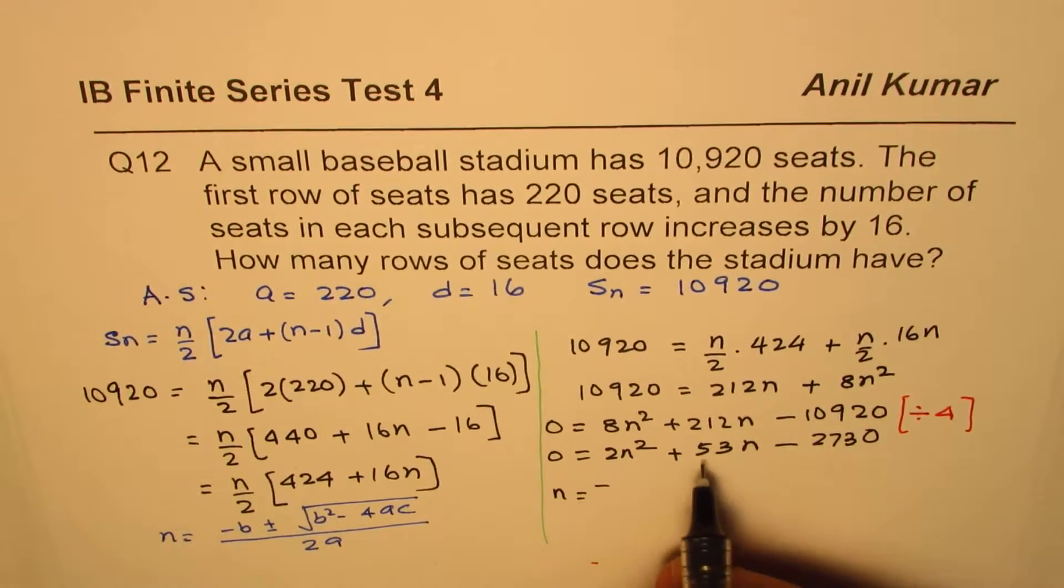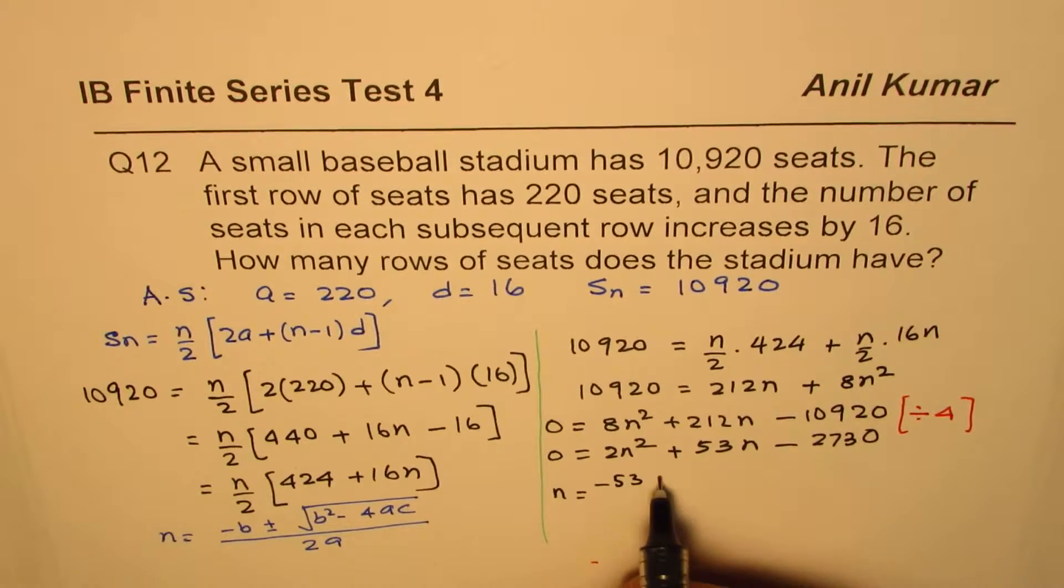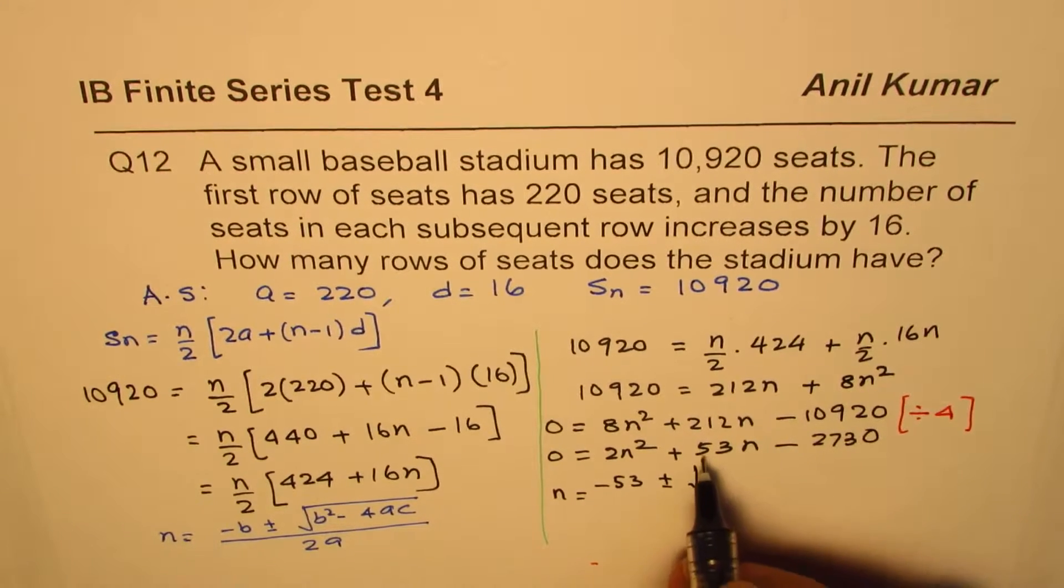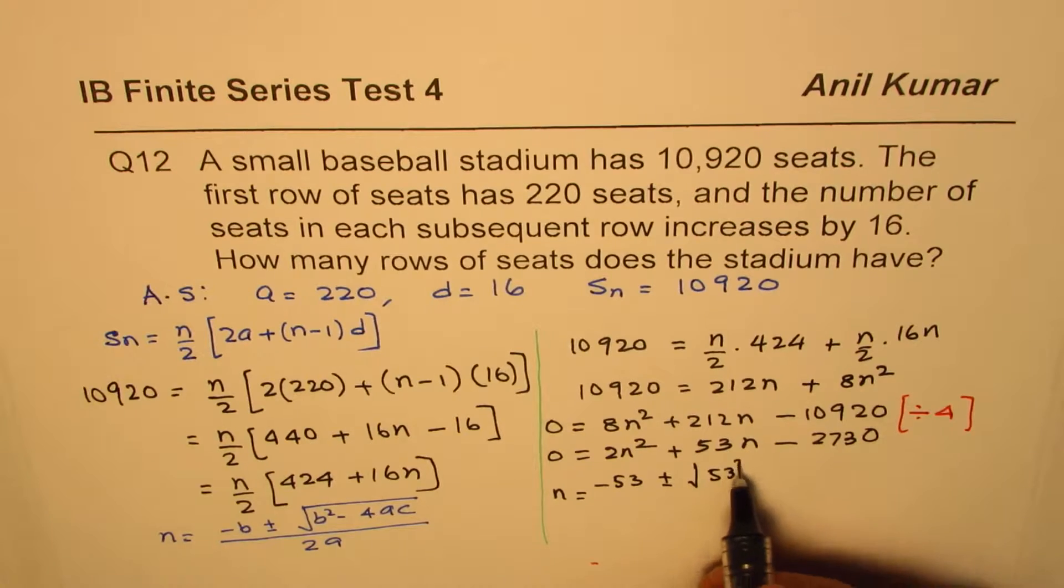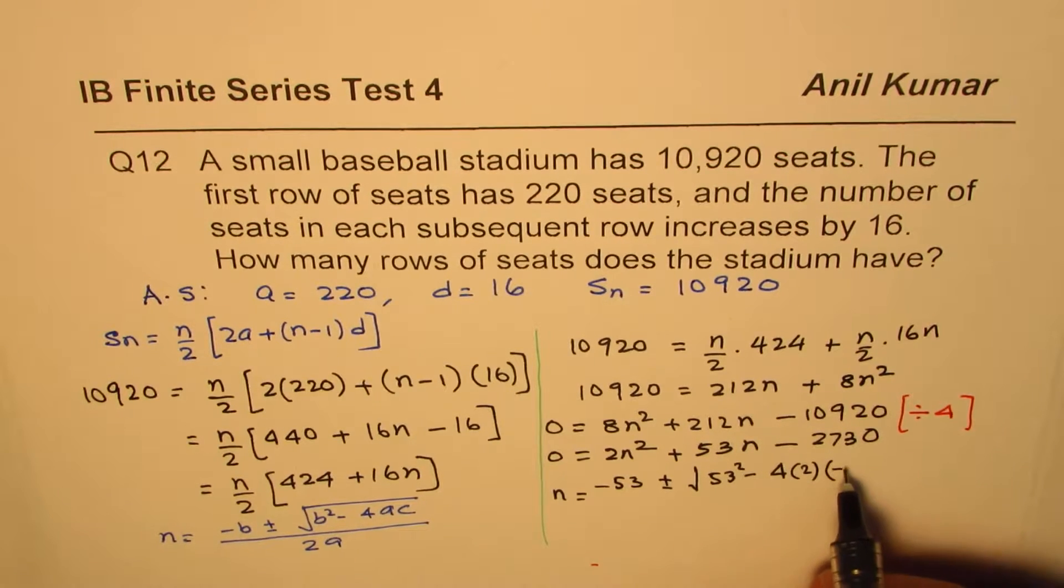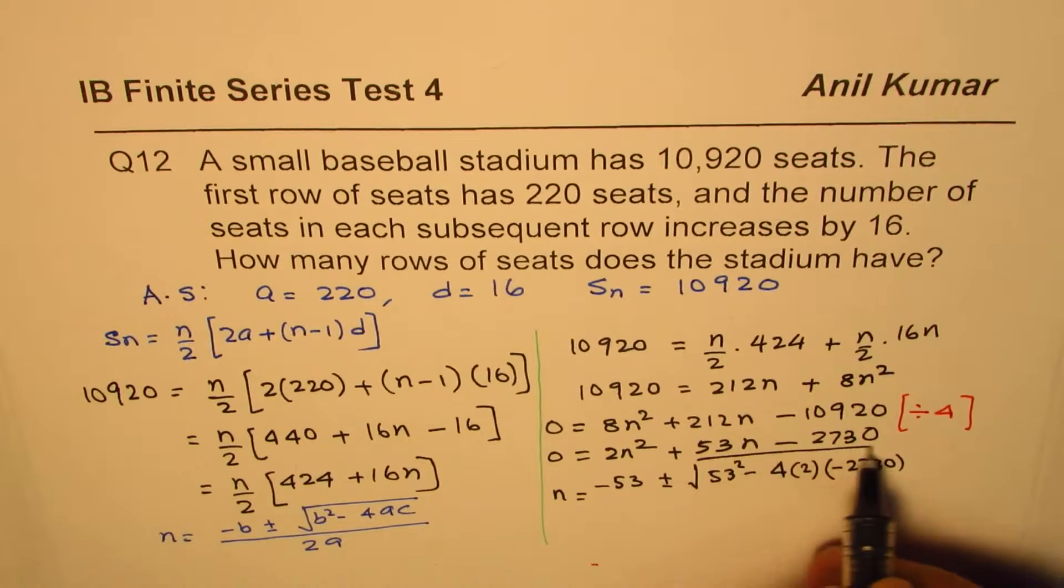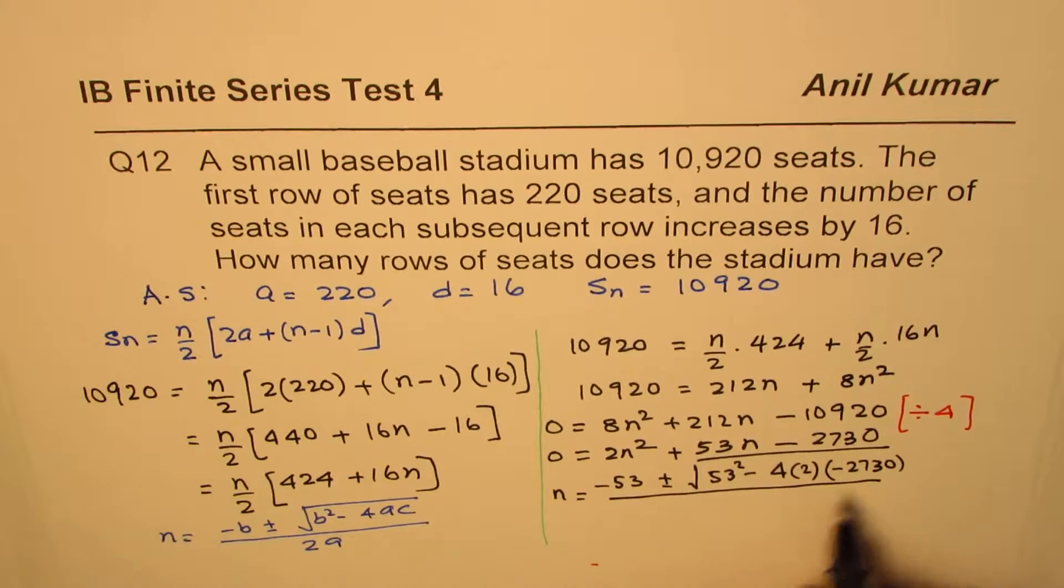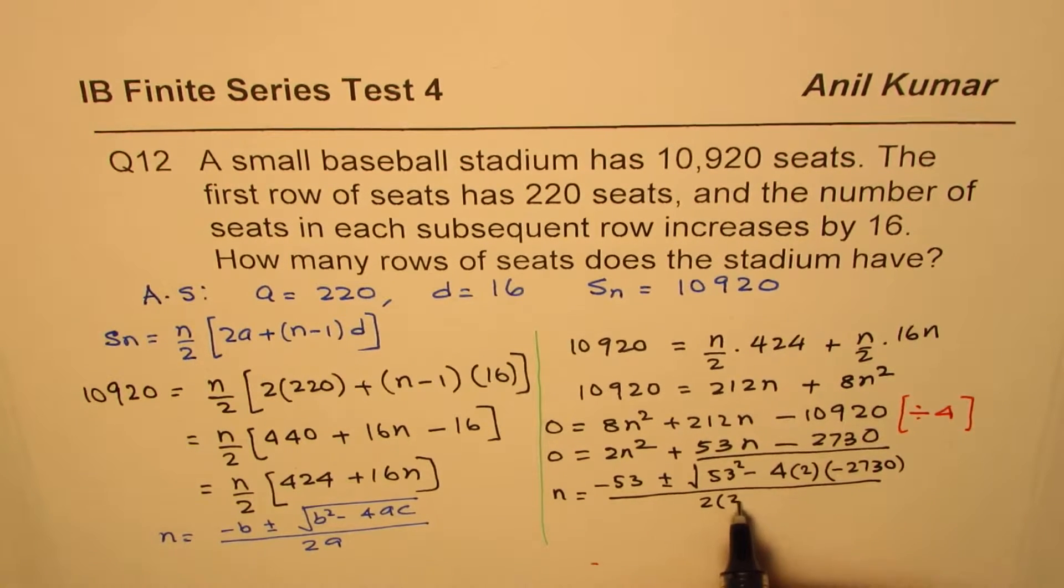So n equals to minus b is 53 plus minus square root of 53² minus 4 times a and c. So it is 2 times, that is minus. Let me write like this: 2730. So that becomes plus. Divided by 2 times 2.